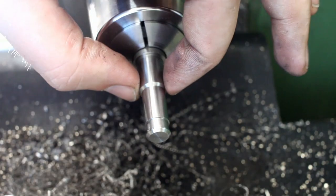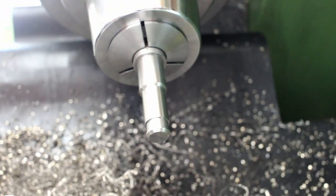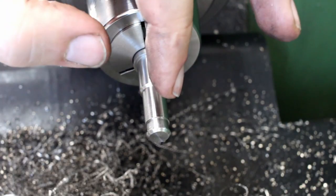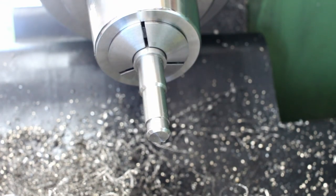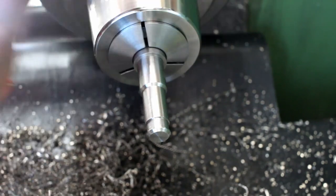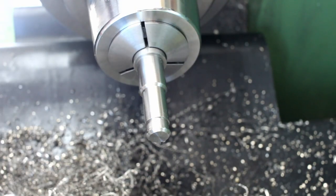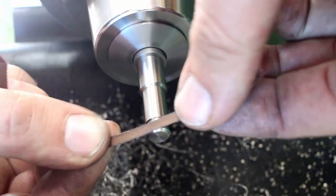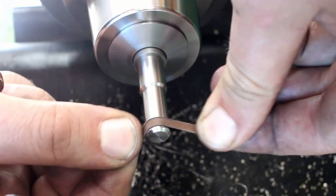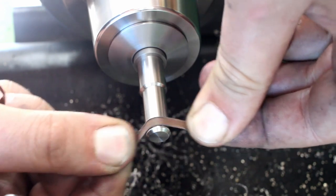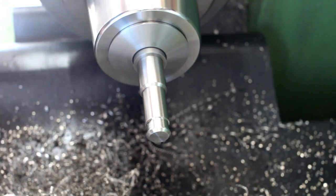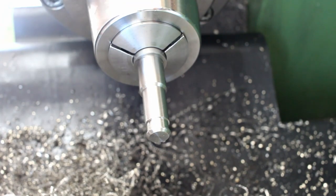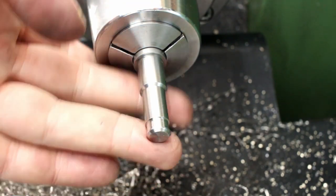The Cratex really makes a difference. Last step on the OD is to polish the groove. I'm just taking a narrow strip of 400 grit emery cloth and run it through the slot. There we go, good enough.